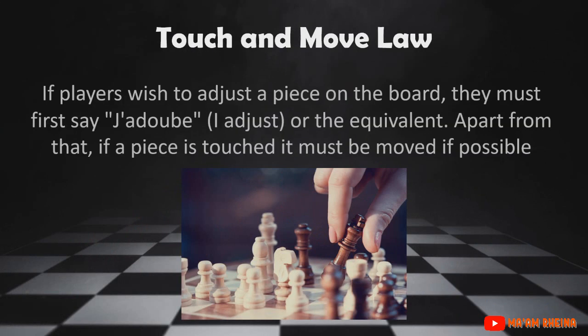Touch and Move Law: if players wish to adjust a piece on the board, they must first say 'J'adoube,' 'I adjust,' or the equivalent. Apart from that, if a piece is touched it must be moved if possible. If no legal move is possible with the touched piece, the player must make a legal move with another piece. When a player's hand leaves a piece after moving it, the move is over and may not be changed.